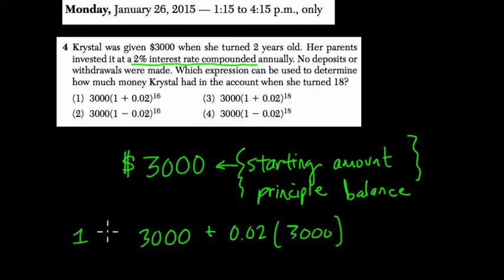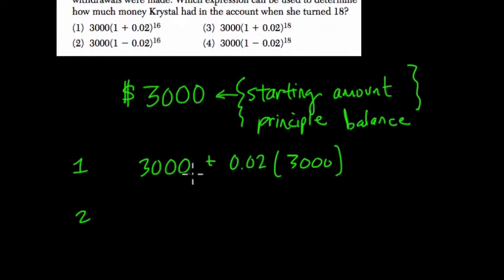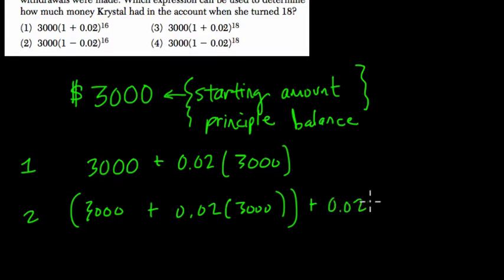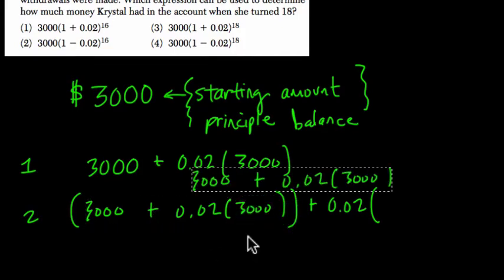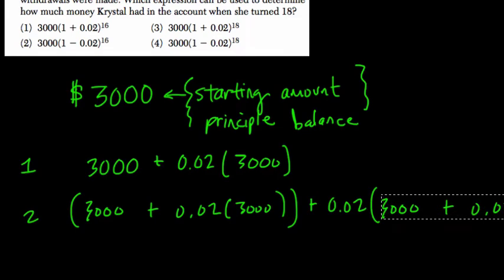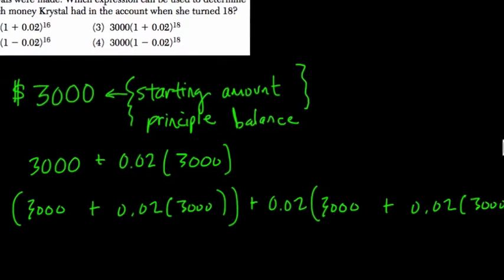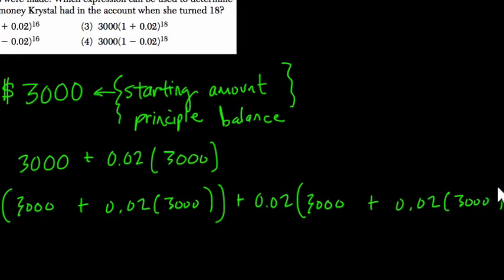So year one. And then year two, what's going to happen? Well, that whole amount, $3,000 plus 0.02 of 3,000, that was what we made the first year. That whole amount, we're going to add another 0.2% on that amount, which is another 0.2% on this. So this is the expression just for two years. And you can imagine that from this perspective, compounding can be very confusing. But we'll simplify this in a much easier way.